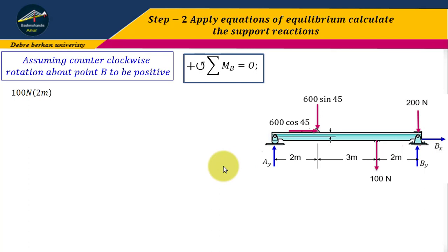If we take moment about point B, the first 100 Newton downward force creates counterclockwise moment with a perpendicular distance of 2 meters.